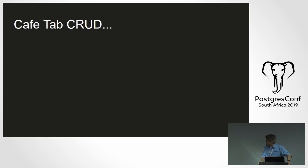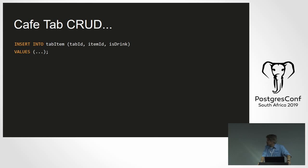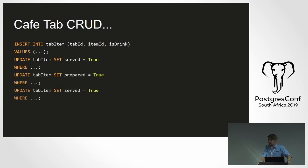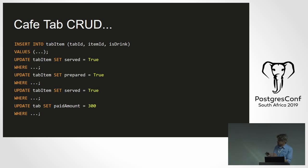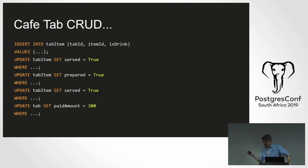With standard CRUD you'd insert into the item table, mark drinks as served, food as prepared and served, and paid — but that doesn't capture as much semantics. The danger is that once you start thinking about this, you want to implement event stores on everything — I've been there. You want to implement it on domains you find important and that need optimization, where you don't understand why things keep getting into a bad state.